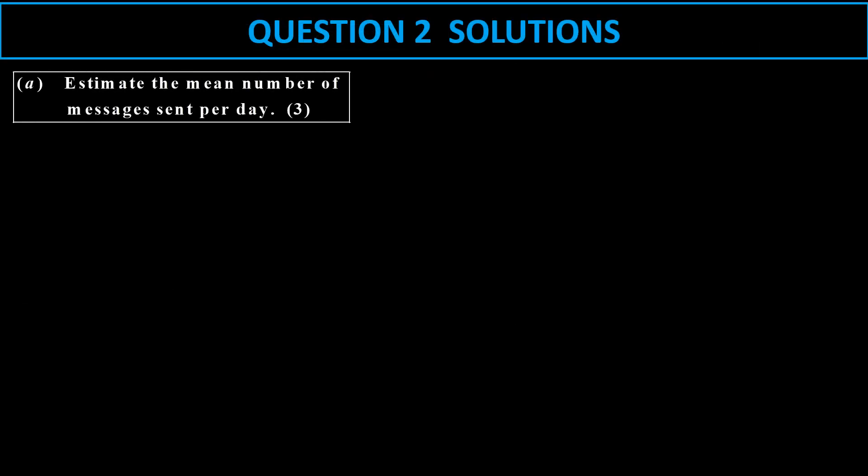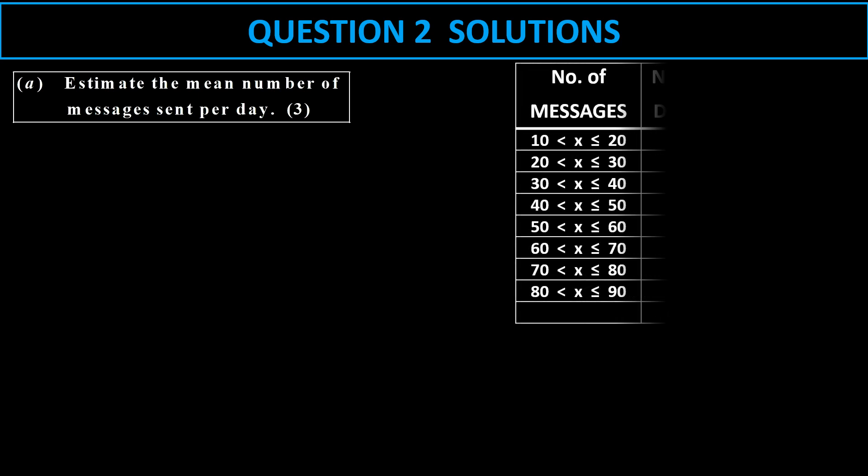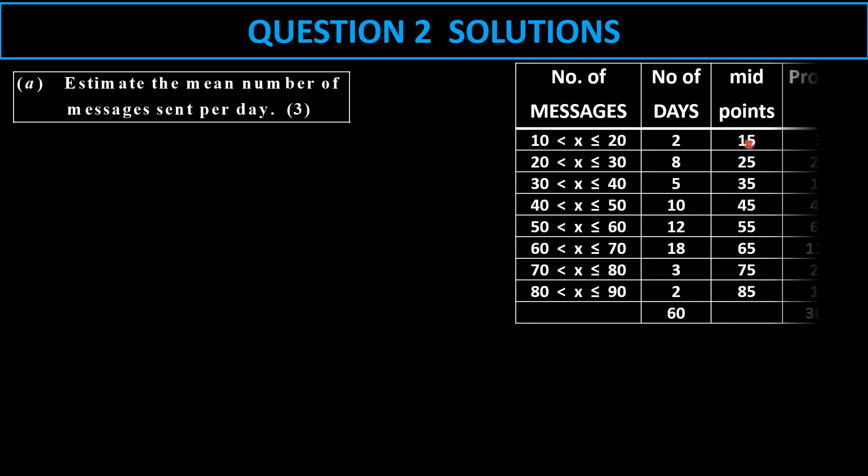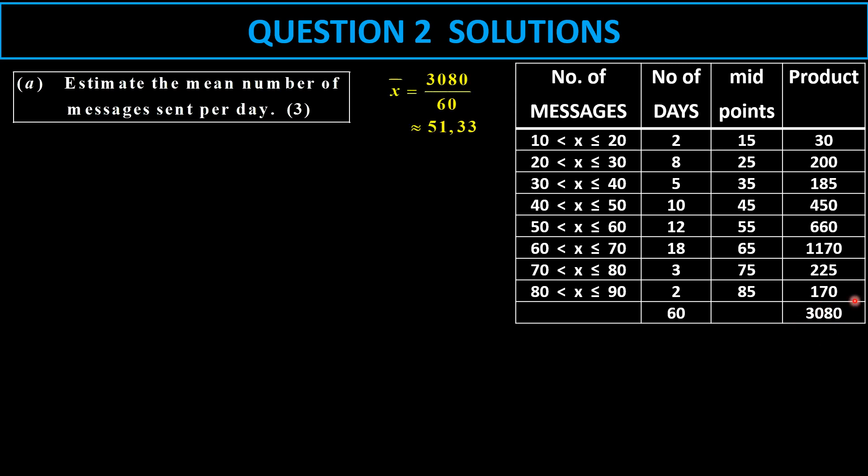The first one, you want to estimate the mean. So for the mean there, we need to calculate the midpoints and then find the product of the midpoints with the frequency. There's the products. And then we have to find the sum. And then we take the sum and you divide it by the total number of days. So it's 3080 divided by 60, which is 51.33 approximately.